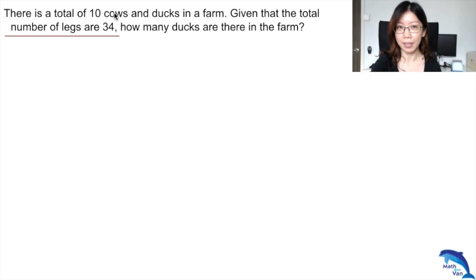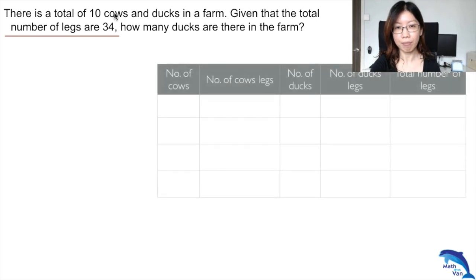Let's start off with the guess and check method. I'll do it slightly differently - I'll start by assuming all are one type of animal. In this case, I'll start off with all as cows.